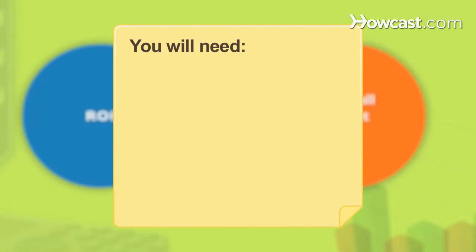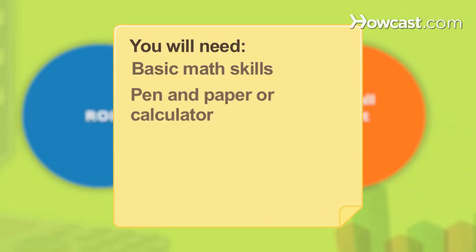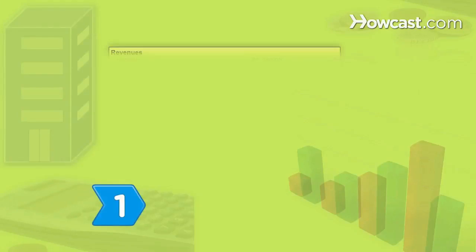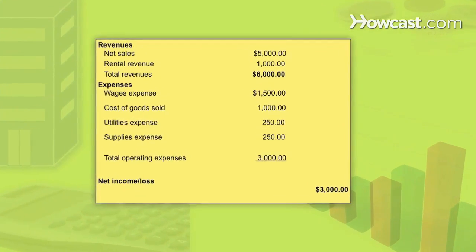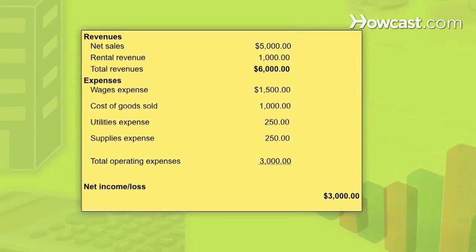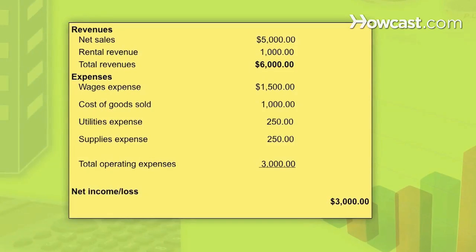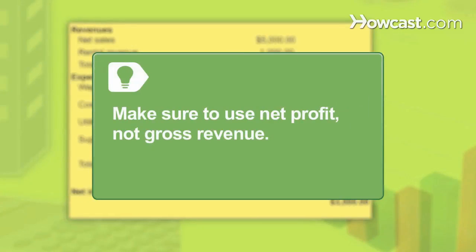You will need basic math skills and a pen and paper or a calculator. Step 1: Determine the company's net profit, also known as net earnings. Make sure not to confuse net profit with gross revenue.